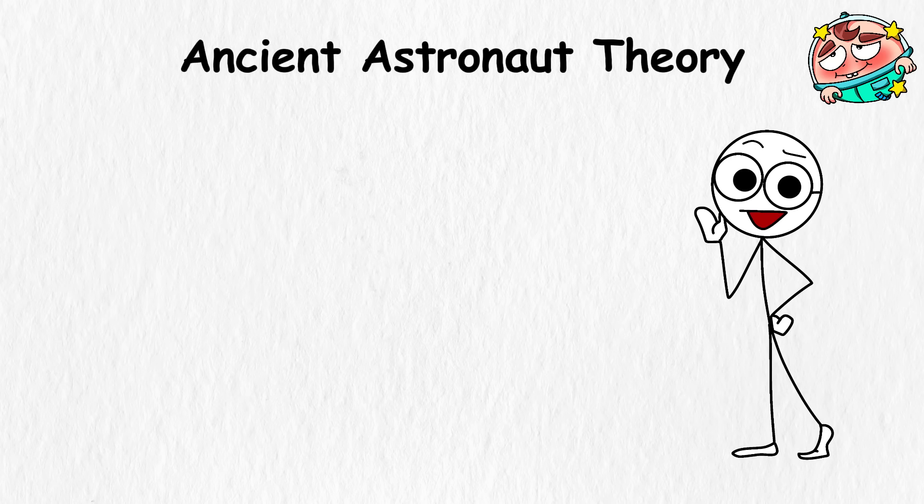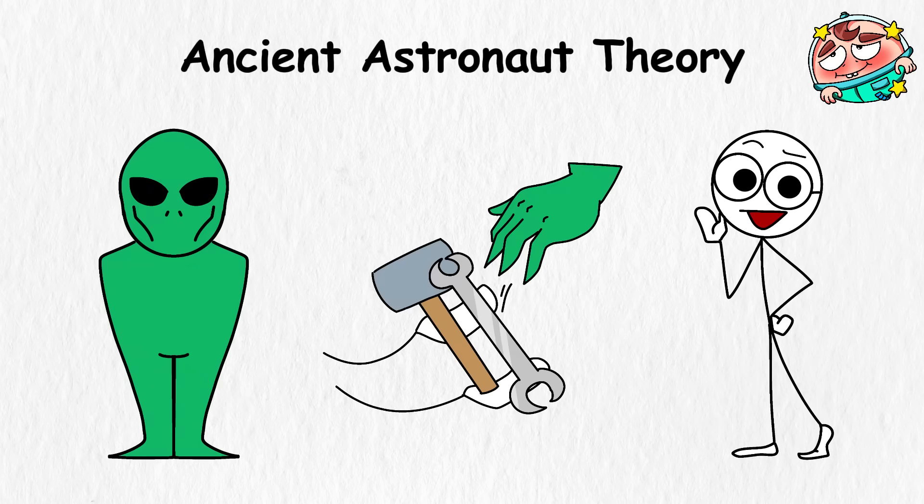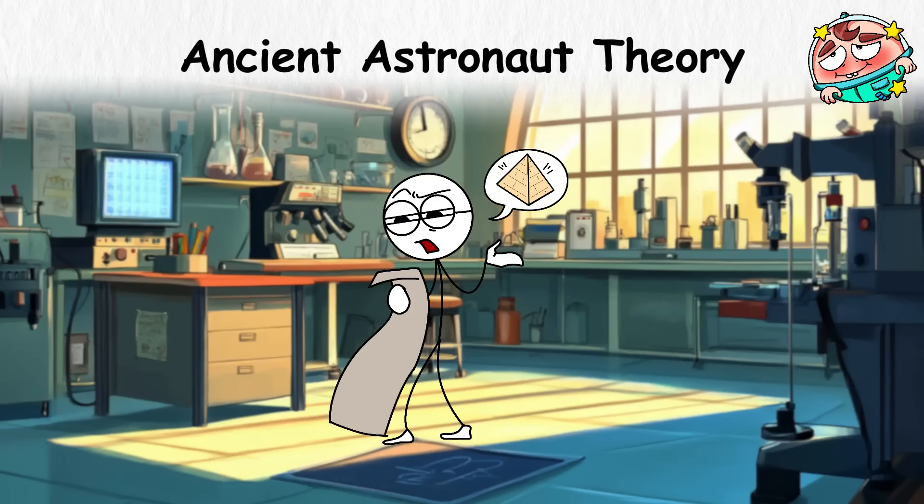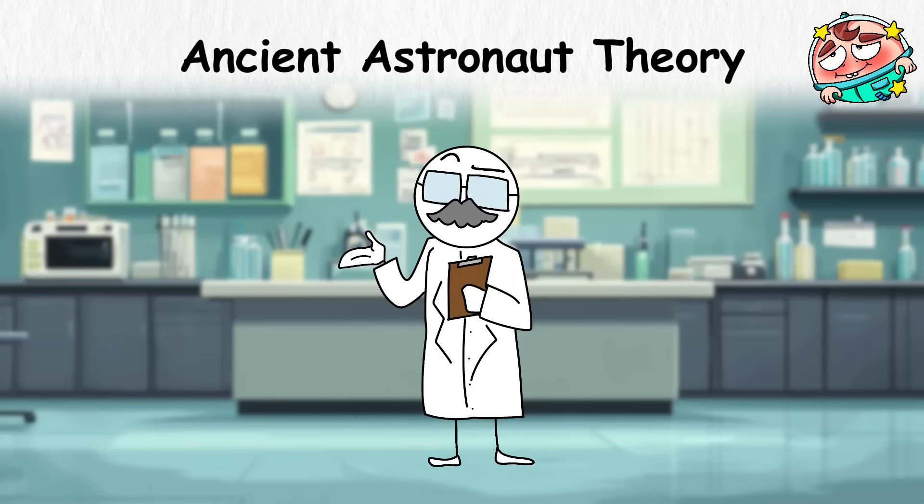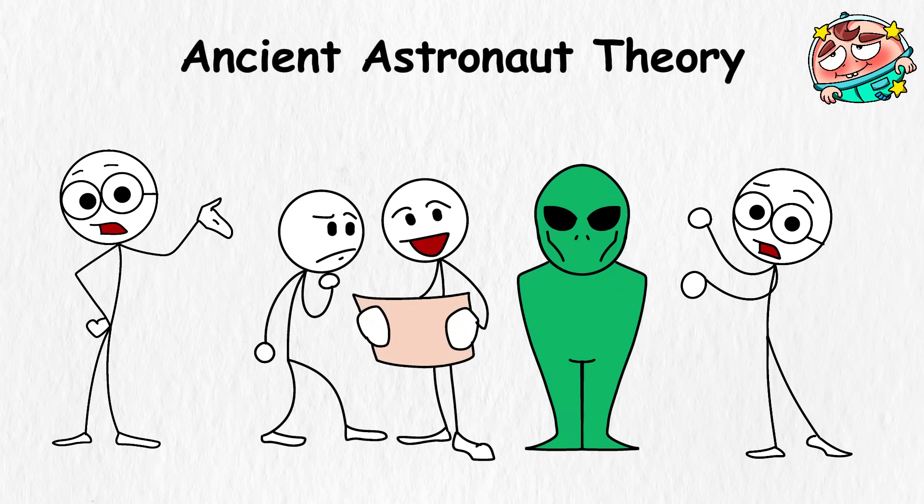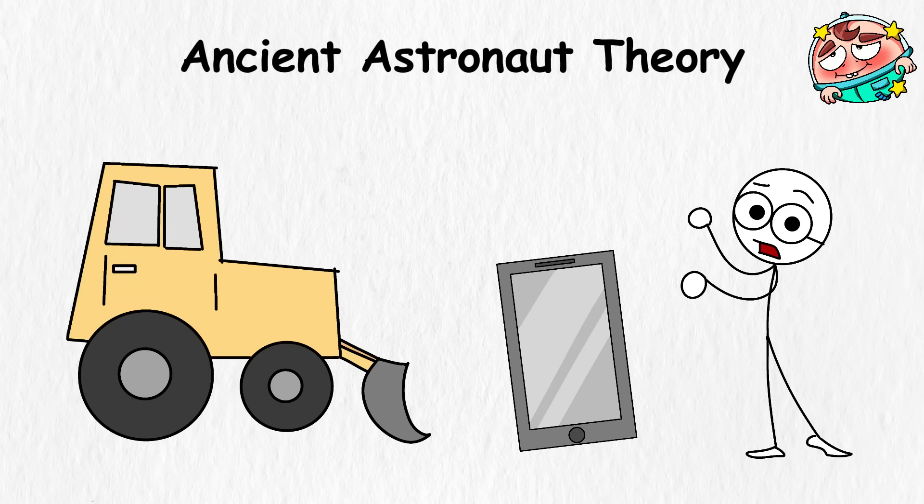The idea goes like this: Aliens show up, gave us tools, taught us how to farm, maybe even mixed a little of their DNA with ours. Then they left. And we've been trying to reverse-engineer the pyramids ever since. Most scientists say there's zero proof, just a lot of imagination. But for fans of this theory, it's a way to explain how early humans made giant leaps without smartphones, bulldozers, or Google.